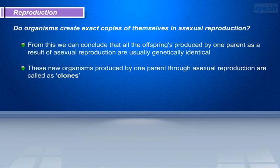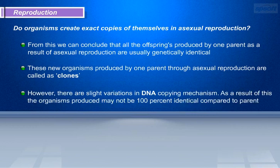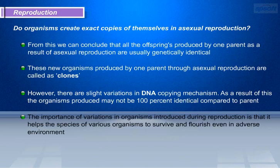These new organisms produced by one parent through asexual reproduction are called clones. However, there are slight variations in the DNA copying mechanism. As a result, the organisms produced may not be 100% identical compared to the parent. The importance of variations introduced during reproduction is that it helps species of various organisms to survive and flourish even in adverse environments.